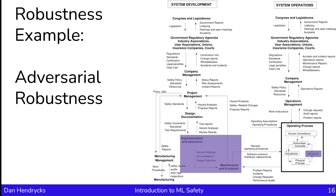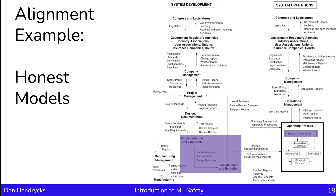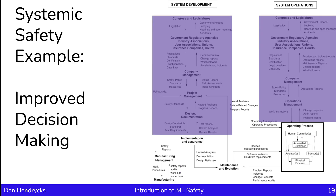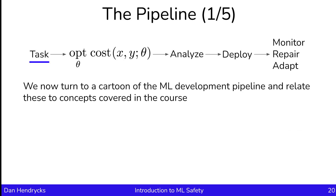Let's look at the larger sociotechnical system and see what some of these research areas address. Adversarial robustness can affect the quality of a sensor. Anomaly and malicious use detection can affect other parts of the sociotechnical pipeline. Honest models can affect other parts too, and improved decision-making can affect higher parts of organizations and sociotechnical systems. Now let's look at a cartoon of the machine learning development pipeline and relate these to concepts covered in the course.